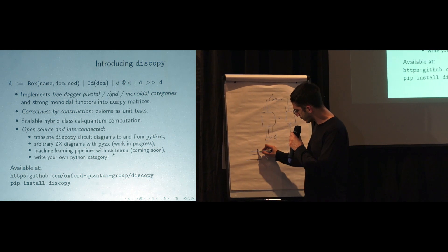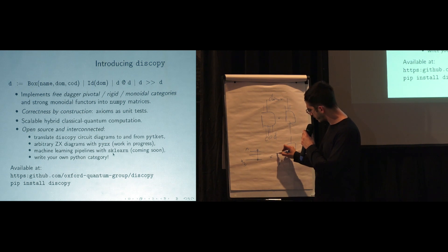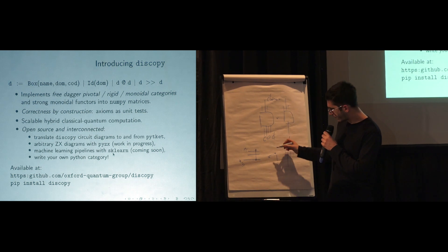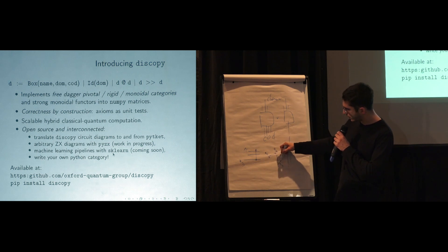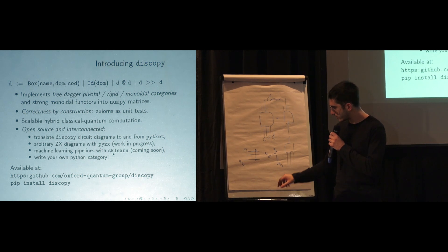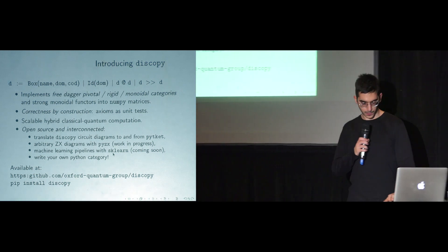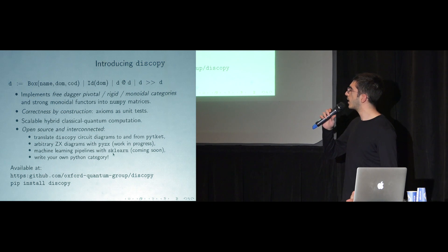You can fit circuits into a particular architecture that has connectivity constraints. For example, you might have a circuit that says qubit one needs to communicate with qubit three, but in your actual architecture — IBM or Rigetti — you have a connectivity graph where qubit one and qubit two are not connected. So you have to find the best realization of that abstract circuit on the actual machine. This is called compiling, and TKET is the compiler that CQC is advancing, which works with PyZX in the background.